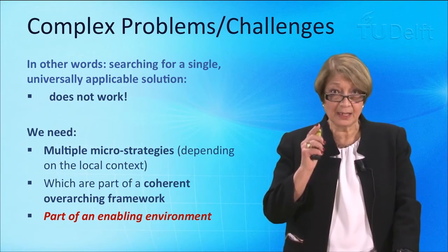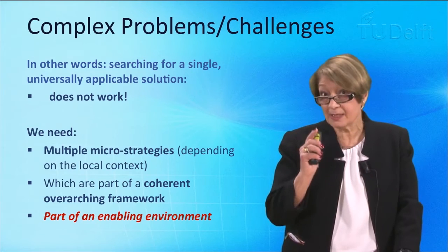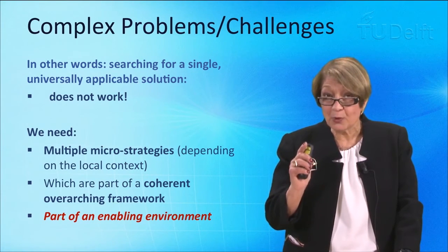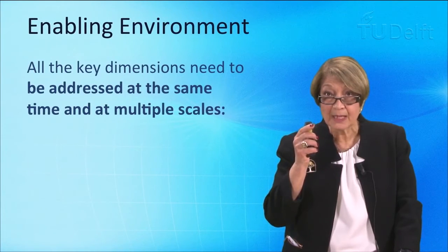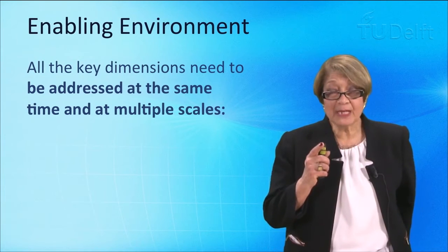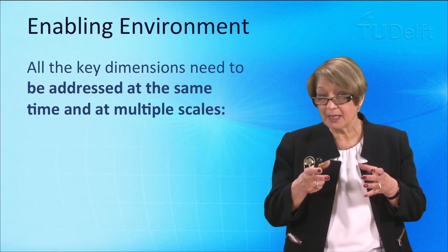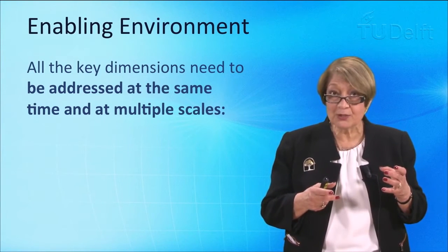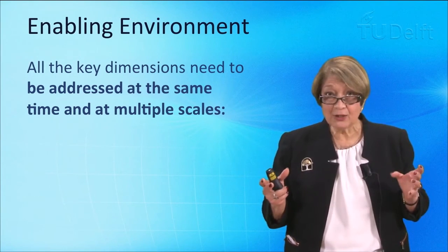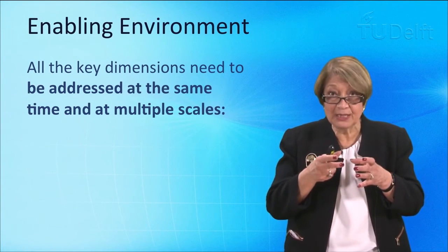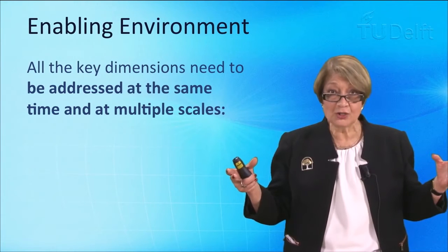What we need are multiple microstrategies which are part of a coherent overarching framework, which is part of an enabling environment. This is the second big idea I want to present to you. So the first idea is that a complex problem has multiple dimensions and multiple causalities, and the way to address them is through an enabling environment, not a single solution. But there's something else as well: all the dimensions in that cluster need to be addressed at the same time. We cannot say today we will address culture, tomorrow organisational structure, the day after the financial — no, that cannot happen because we are again isolating a single dimension.